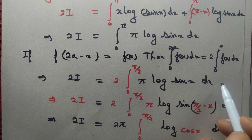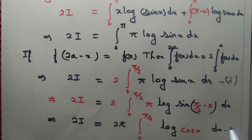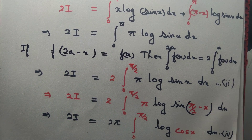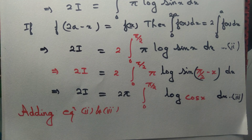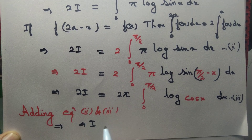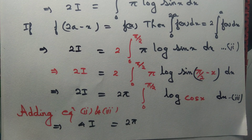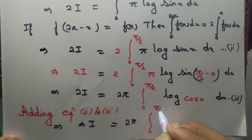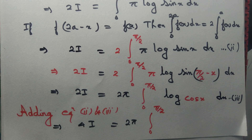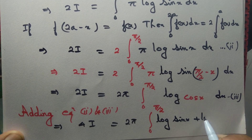Let us write the first form as equation 2 and the cosine form as equation 3. Adding equations 2 and 3: 2I + 2I = 4I equals 2π times the integral from 0 to π/2 — taking the common factor — of log(sin x) + log(cos x).